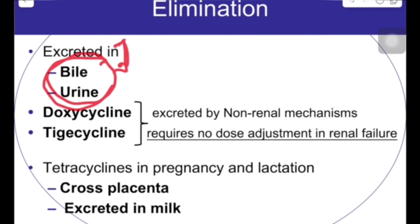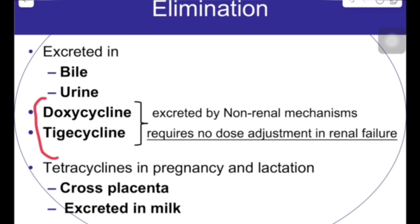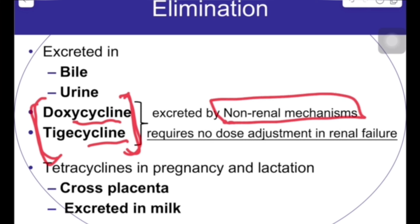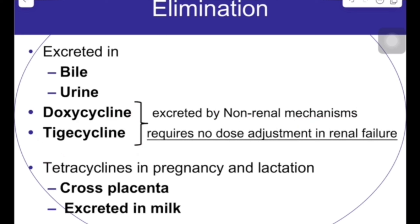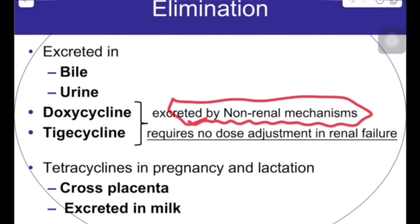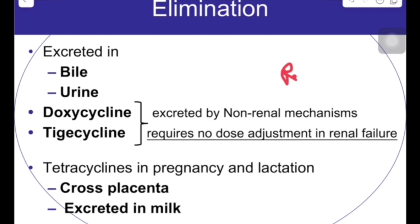Moving on to elimination of tetracyclines: they can be eliminated through urine or bile. However, the preferred tetracyclines — doxycycline and tigecycline — are excreted through non-renal mechanisms. This is very important because they can be used in patients with renal failure or kidney damage.